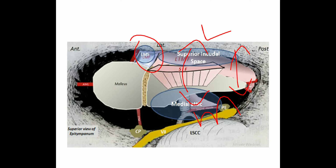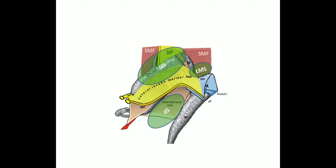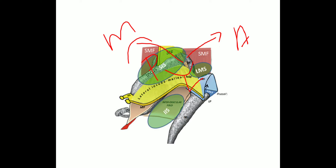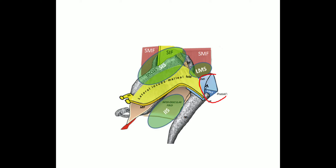The space just above the lateral malleal fold is called the lateral malleal space. In the posterolateral view of the right middle ear, we again see the superior malleal fold dividing the attic into an anterior and posterior attic; the posterior attic divided by the superior incudal fold into medial and lateral portions; and the lateral posterior attic divided by the lateral incudomalleal fold into a superior incudal space and inferior incudal space, with the lateral malleal space just above the lateral malleal fold.